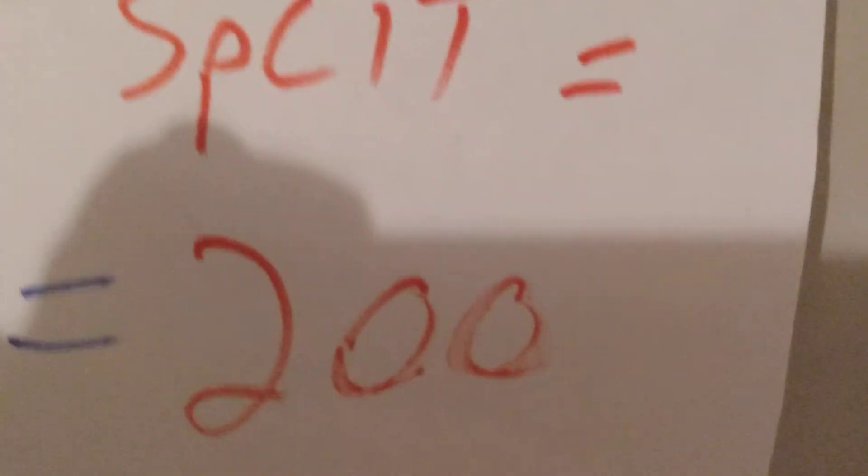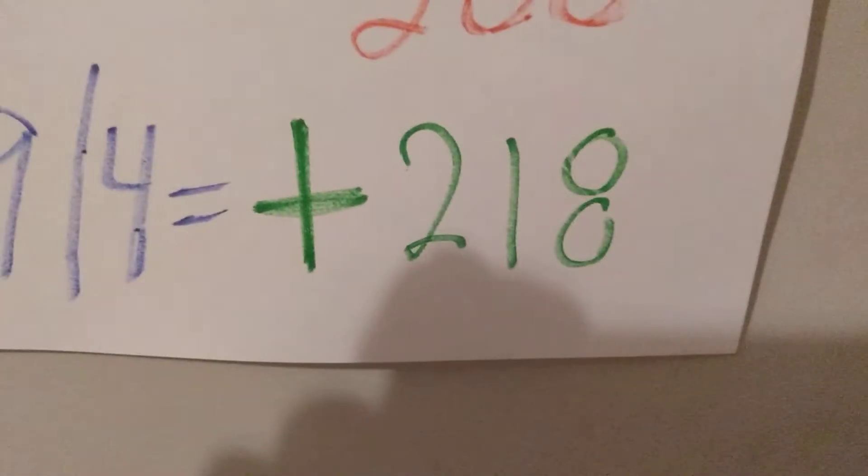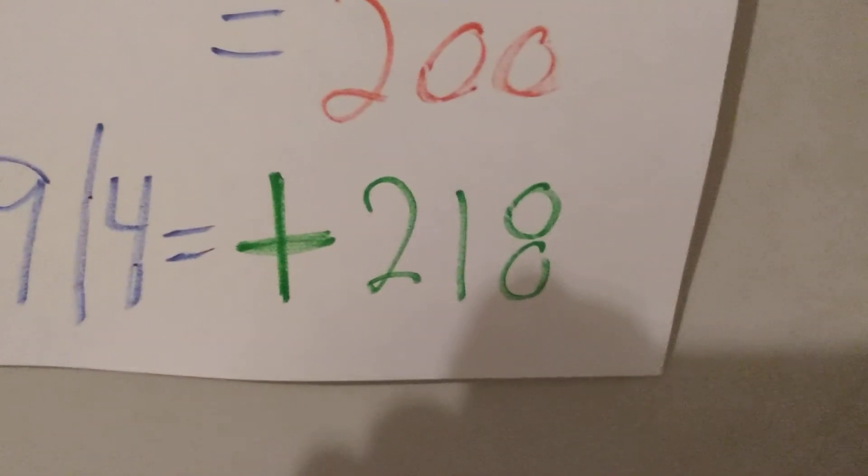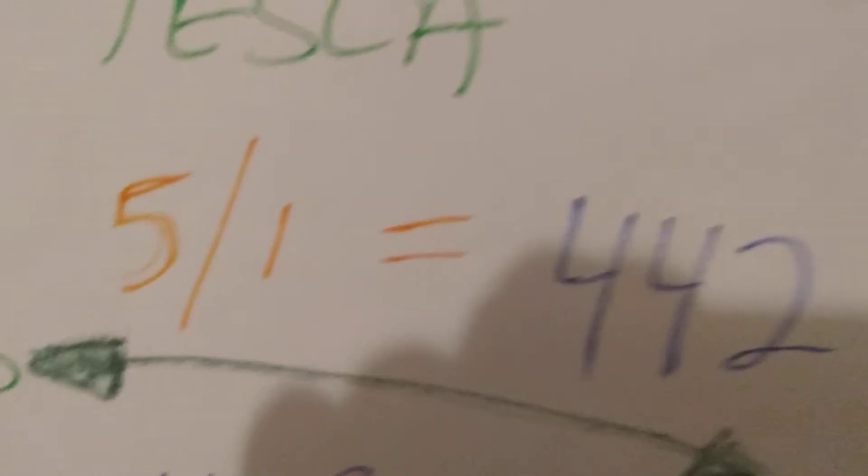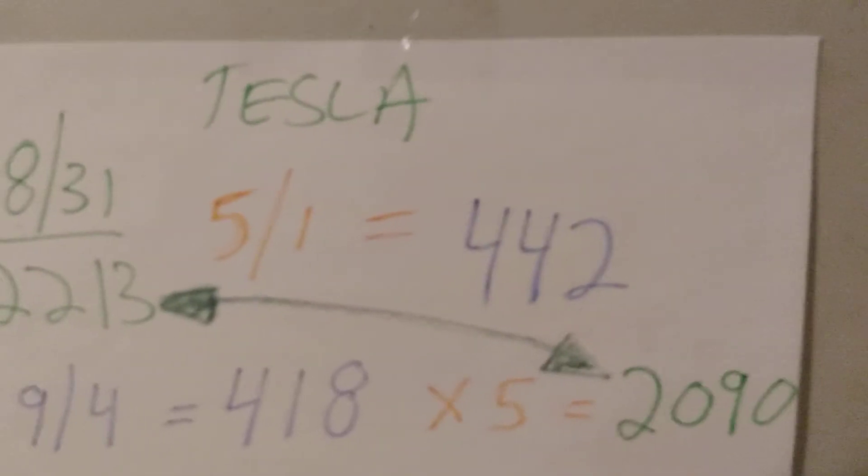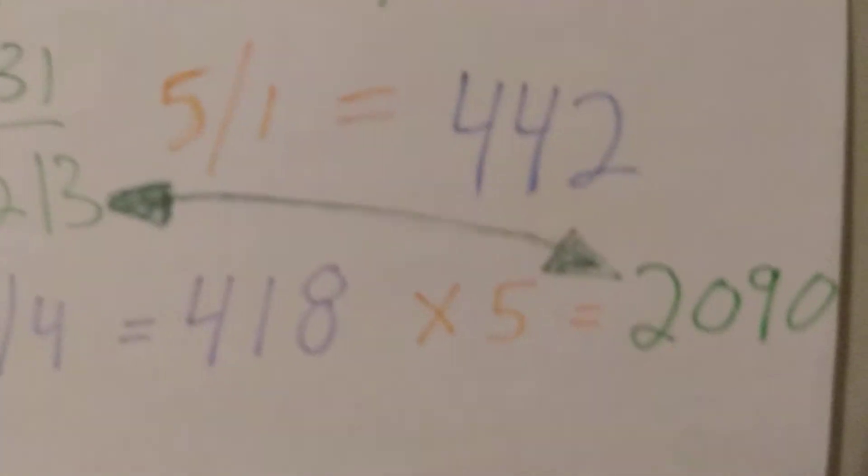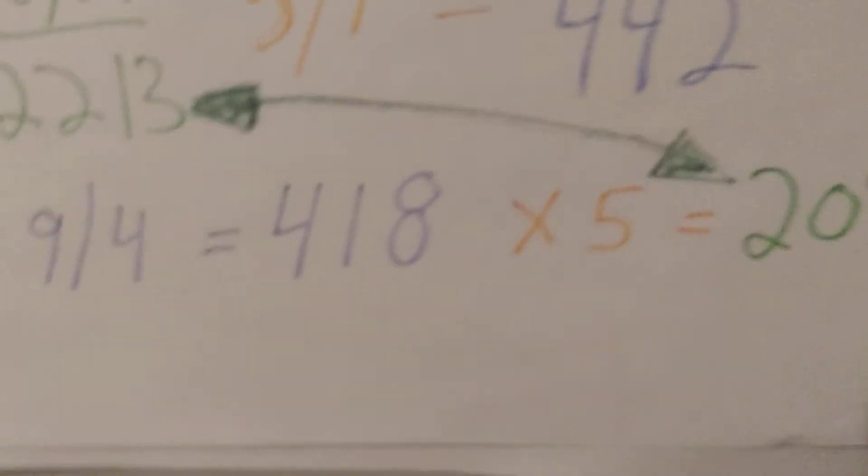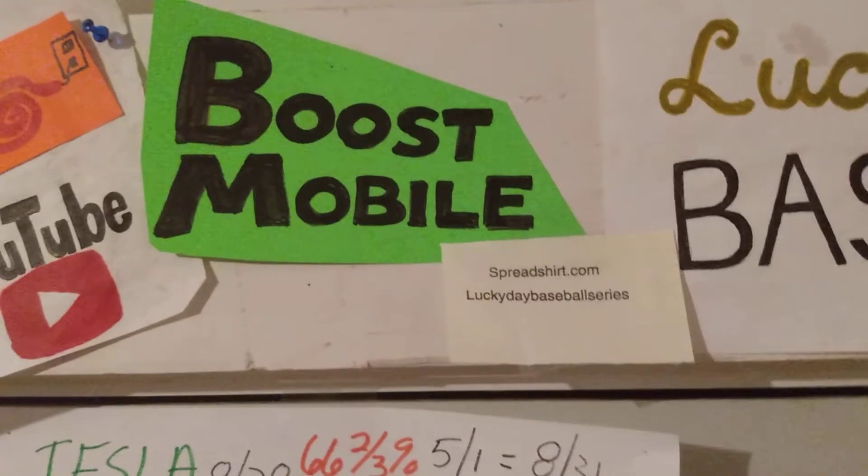If you bought that one share at $1,000 and it split, which really means you bought five of them at $200, and Tesla closed today at $418, which it did, then your profit so far is $218 a share. All is not lost, friends. It was a rough week, it was up and down, but it could have been a lot worse.